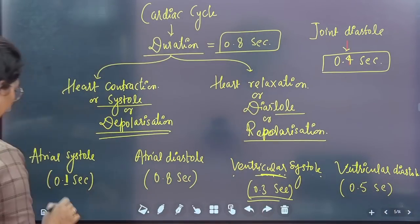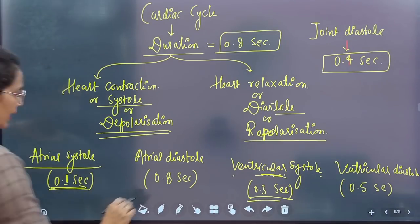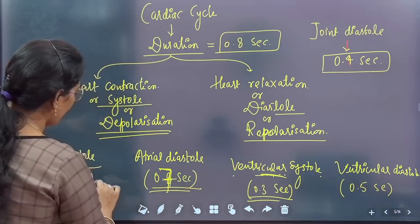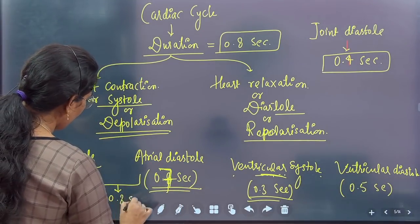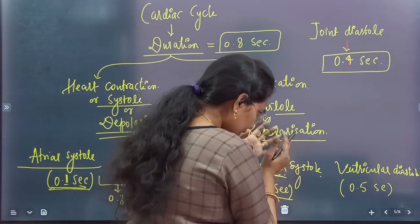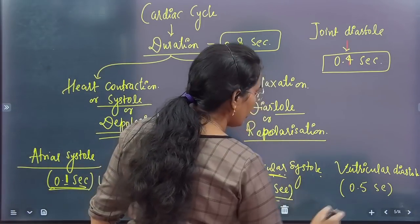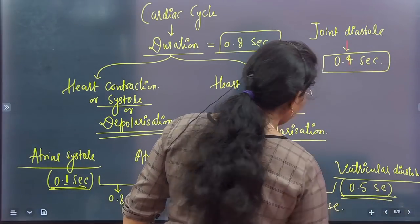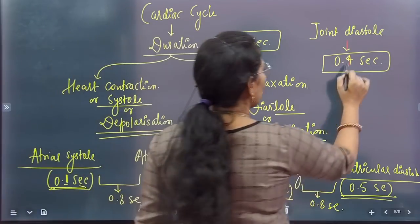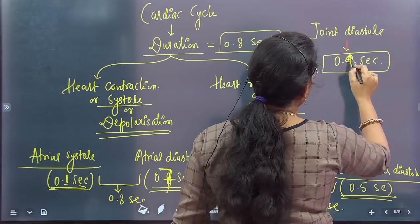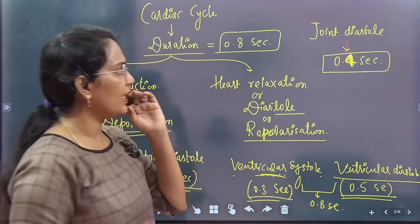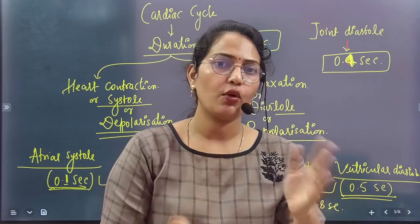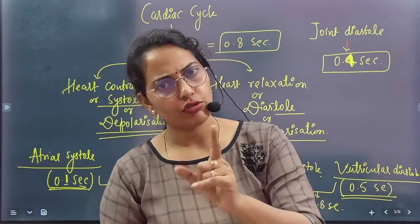Looking at the diagram: on the timeline up to 0.8 seconds, for the first 0.1 seconds only the atria are contracting. For the remaining 0.7 seconds, the atria are relaxing. When the atria are contracting, the ventricles are relaxing — ventricular diastole. The ventricles contract for 0.3 seconds and relax for 0.5 seconds. There comes a time when all four chambers are relaxing together.